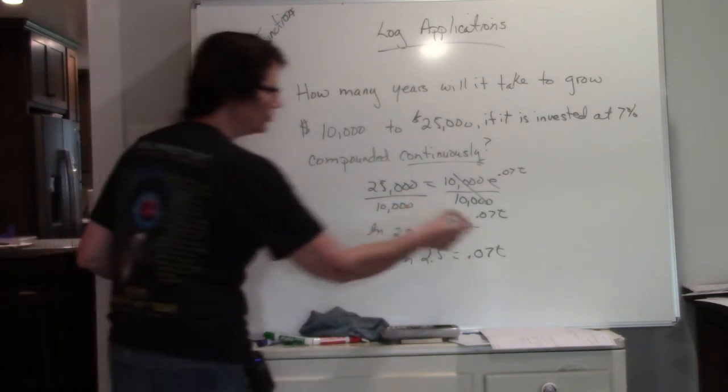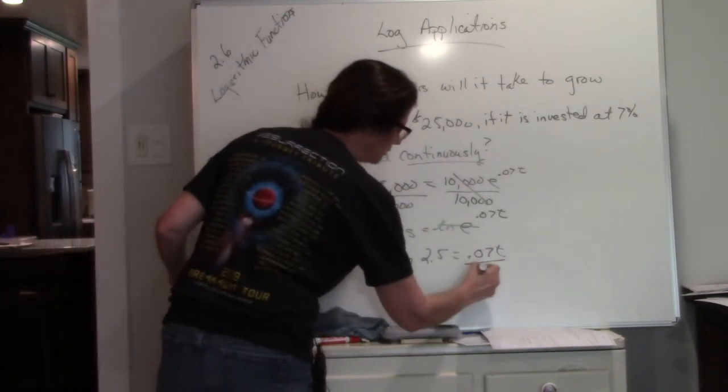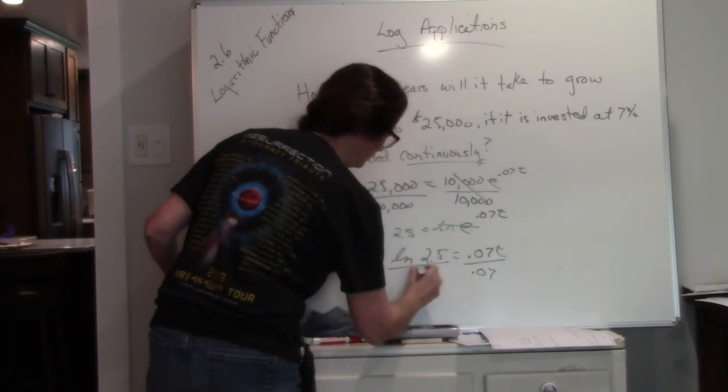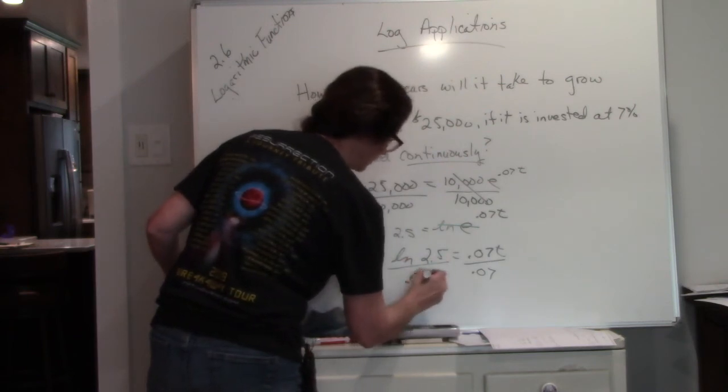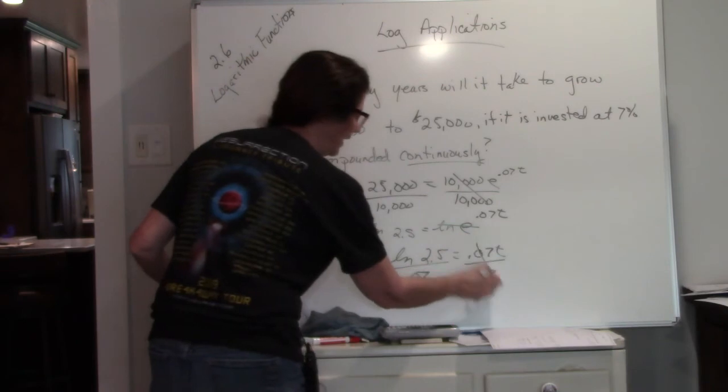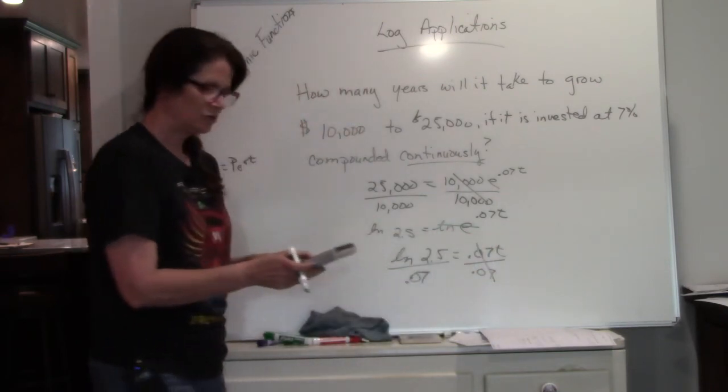So to get T by itself, I'm going to divide both sides by 0.07. That cancels it. Now my T is by itself.